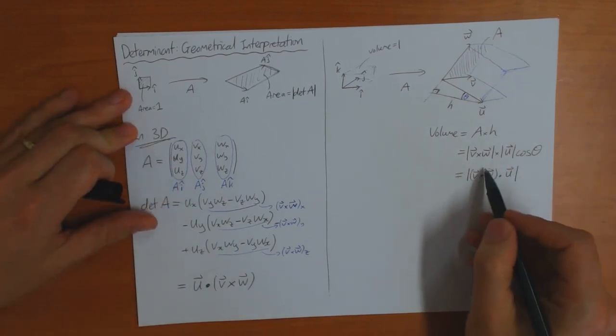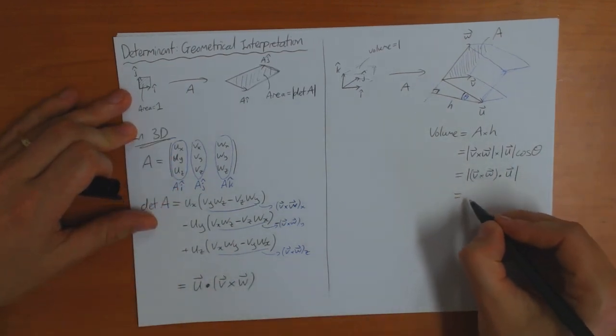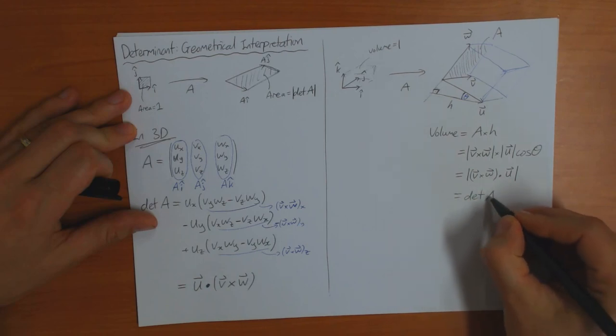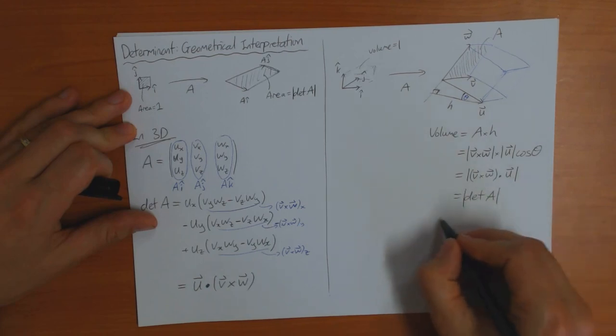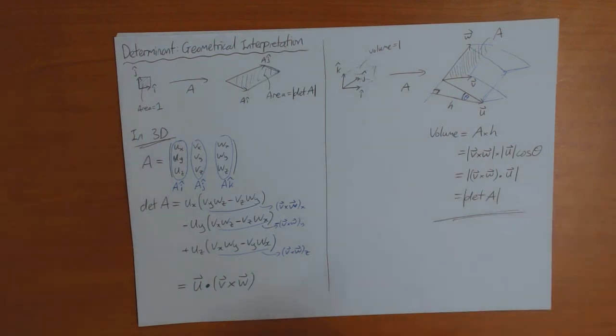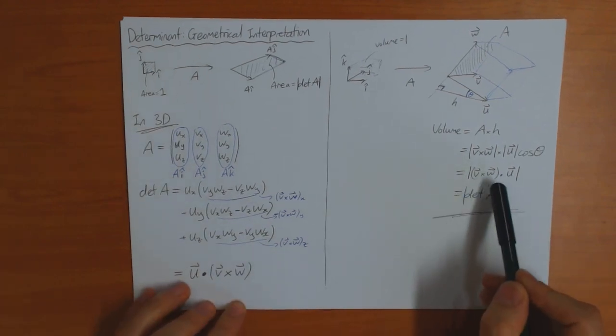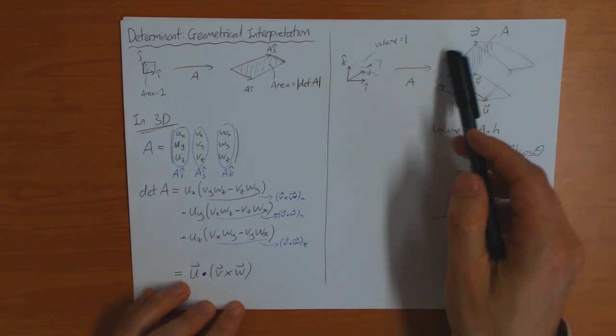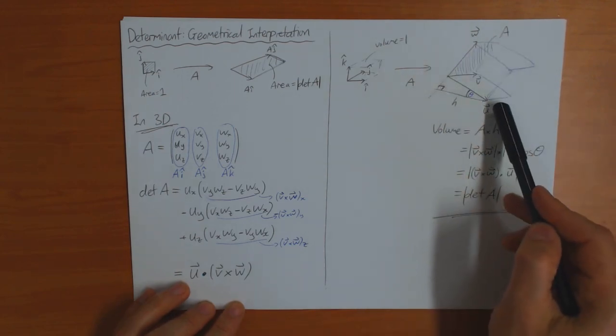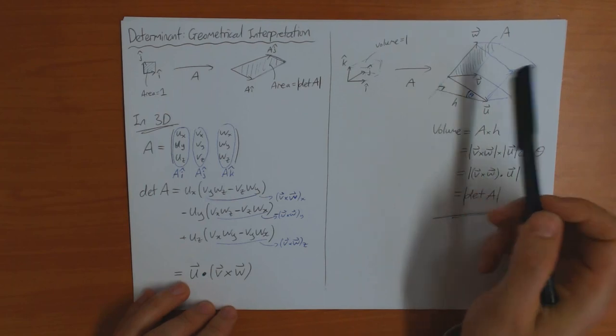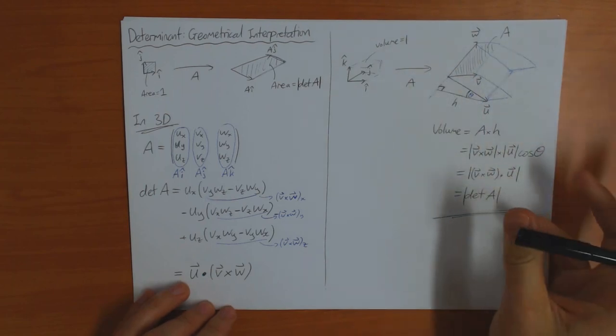But we've already shown that this is equal to the determinant. So that's the answer. So this shows that in three dimensions also, the magnitude of the determinant tells you this change in volume factor of the transformation A. And you can show that this is true in any dimension.